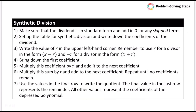Here are all the steps: make sure the dividend is in standard form and add zeros for skipped terms. Set up the synthetic division table and write down the coefficients of the dividend. Determine the value of r for the upper-left box. Bring down the first coefficient, then multiply by r and add to the next coefficient. Repeat until no coefficients remain, then use the final row to write the quotient. The last value is the remainder; all others are coefficients of the depressed polynomial.